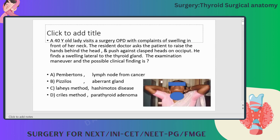The answer is Bezold's method. Bezold's method is nothing but asking the patient to raise the hands behind the head, place them here, and push against the clasped hands on the occiput, so that anything visible here is examined. The swelling is lateral to the thyroid gland, so it may be an aberrant thyroid gland or a lymph node metastasis.